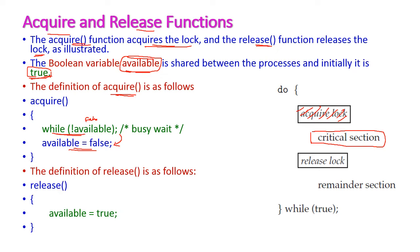Next is the release function. After executing the critical section, the process should release the lock using the release function. The release function sets 'available' equal to true. Initially it was false, and after execution the process changes the available value back to true so that other processes can enter the critical region.